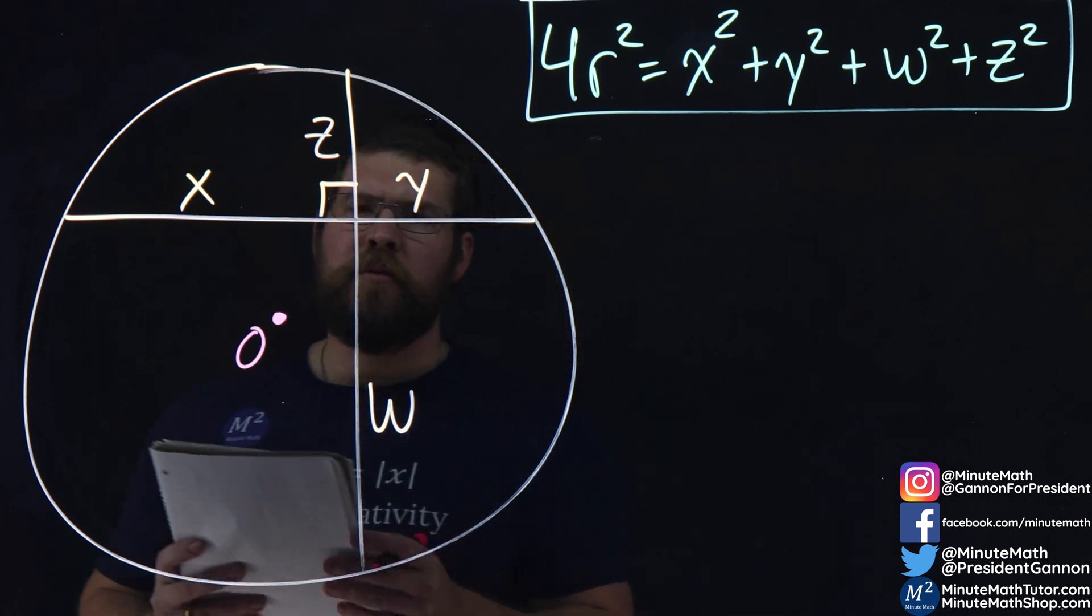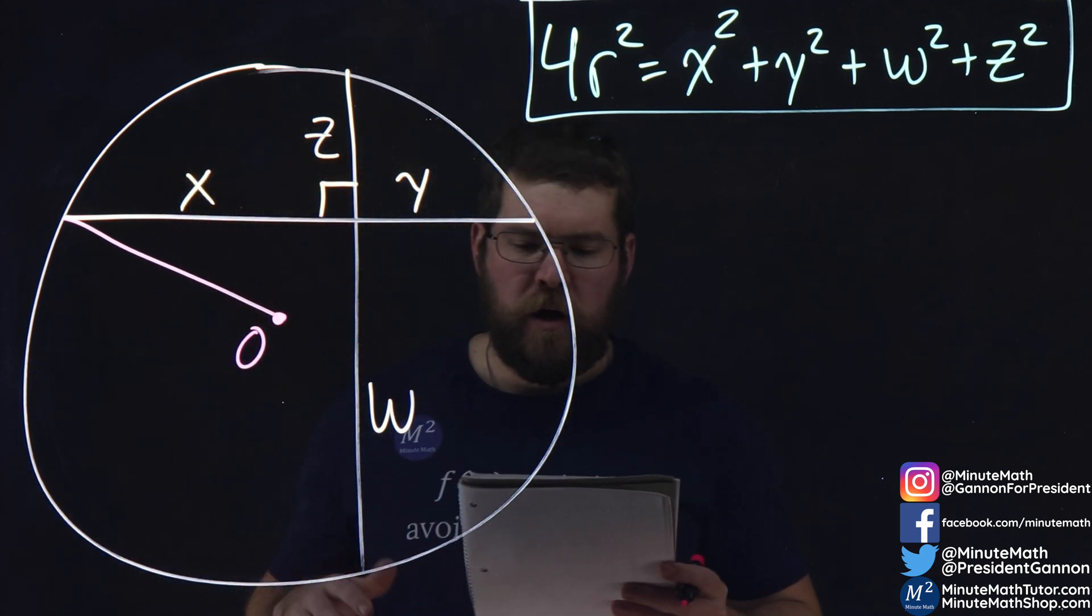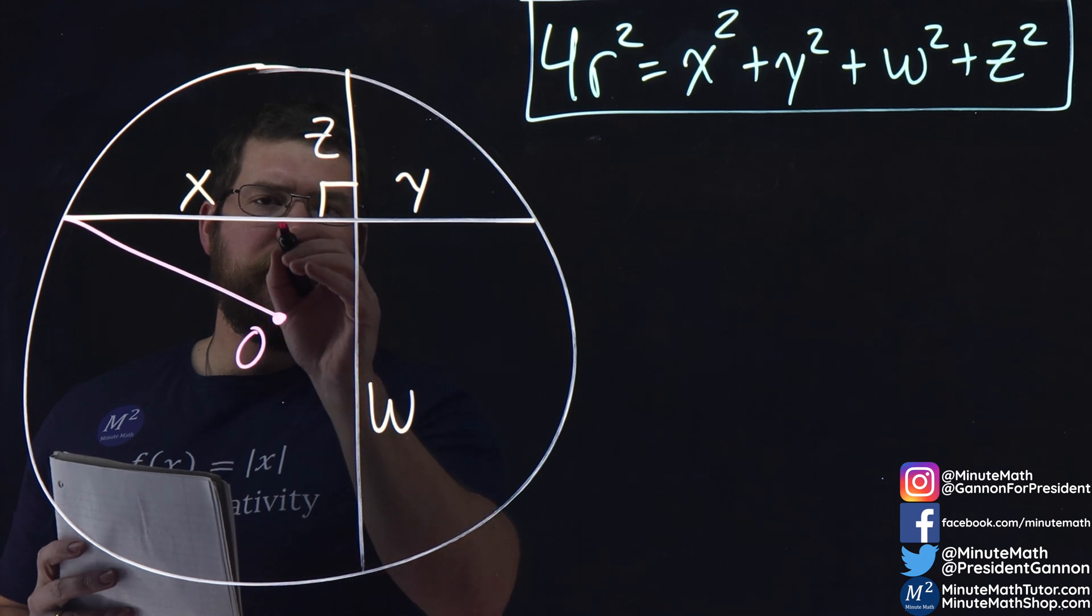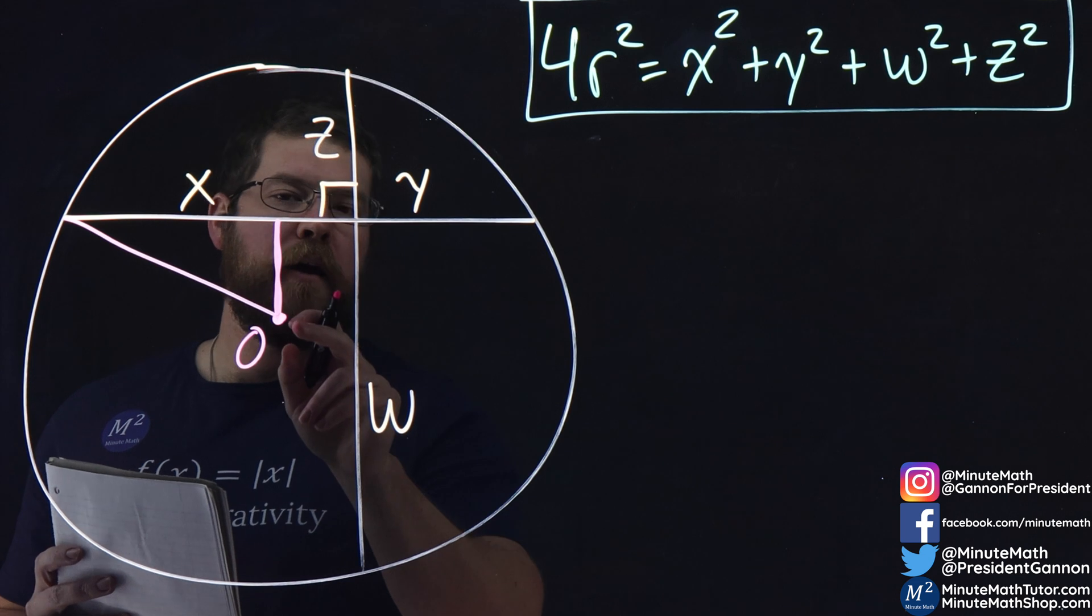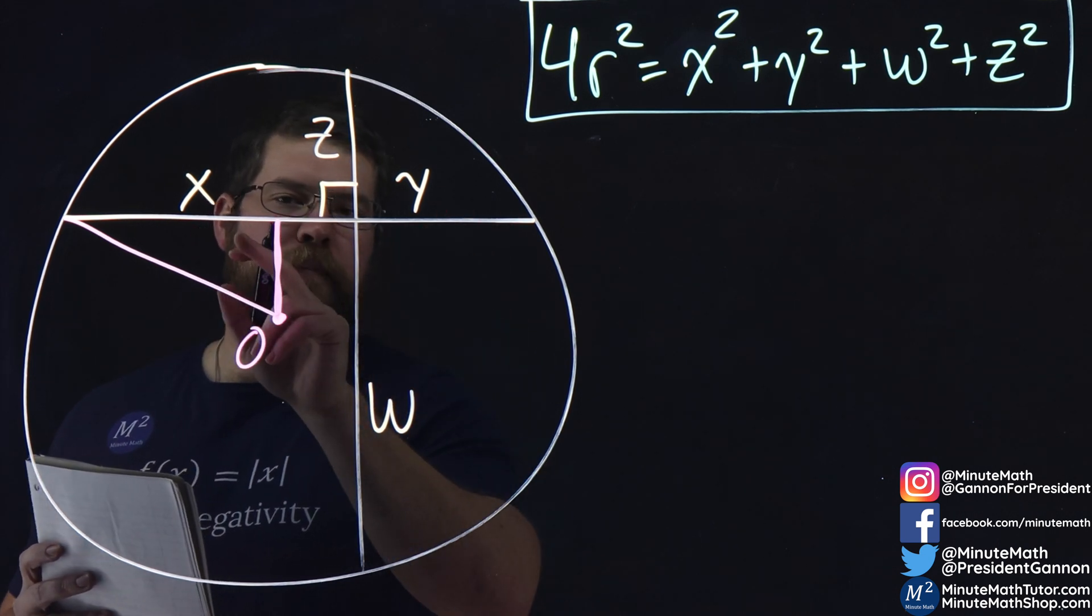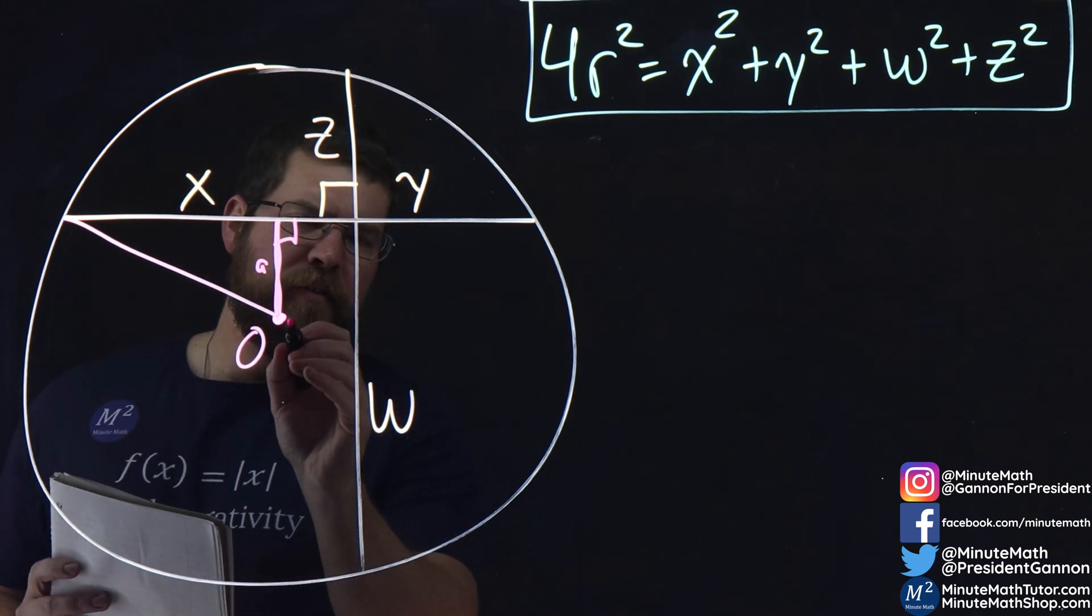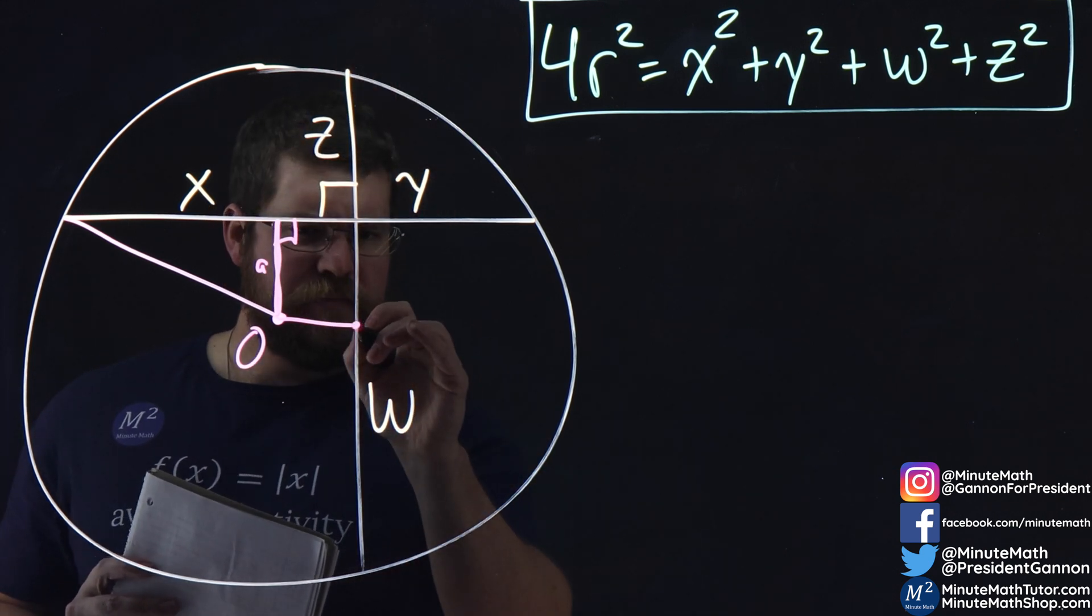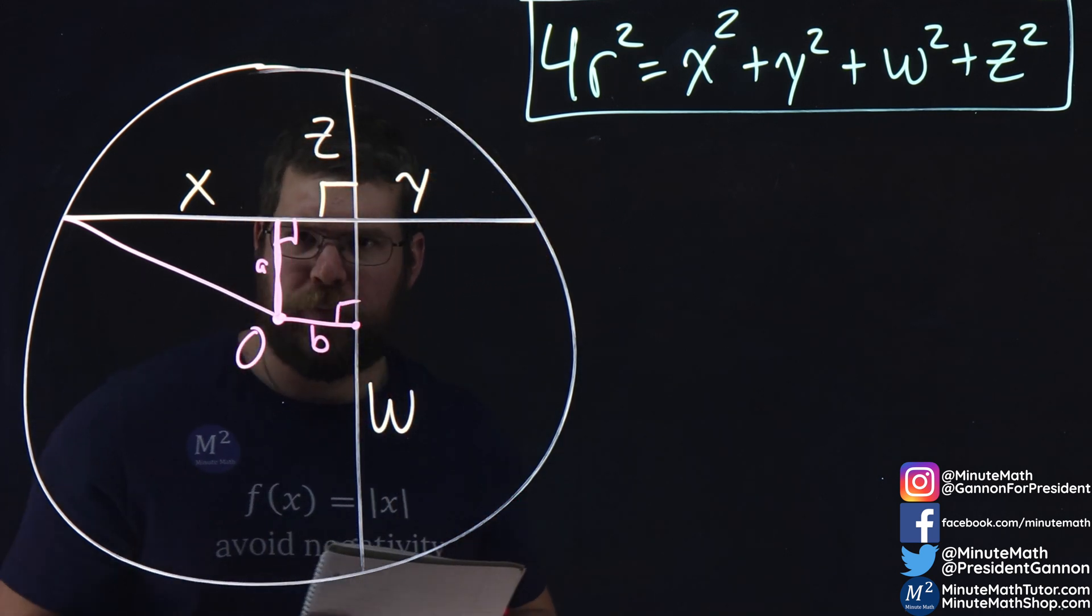Our radius r can connect from the edge of this chord right there. What I'm going to do is make a perpendicular line to the chord. When we have a perpendicular line to the chord from the center, it bisects this chord. I'm going to call this length a. I'm going to do the same thing here, perpendicular to chord zw, and call that length b.